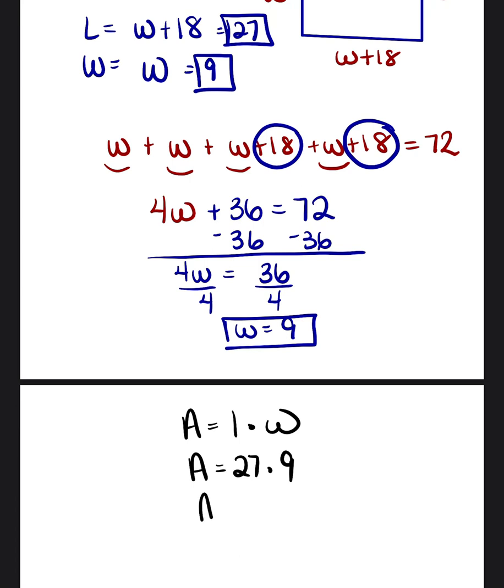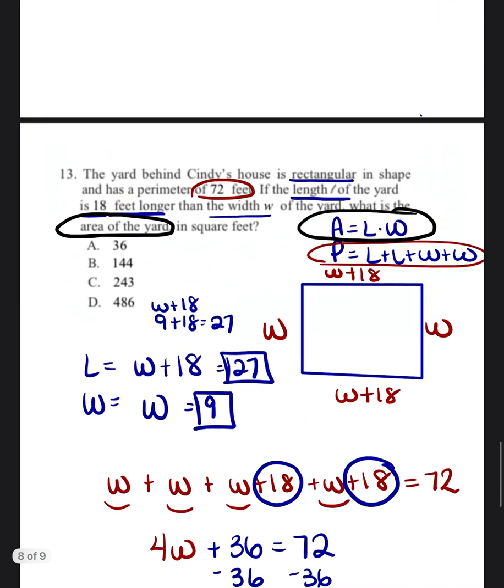And 27 times 9, you can go ahead and put that into the calculator, is 243 feet squared. So the answer to this question would be C, 243.